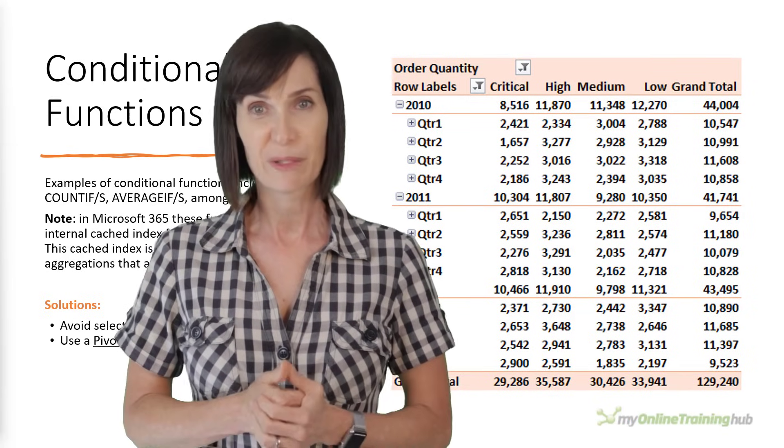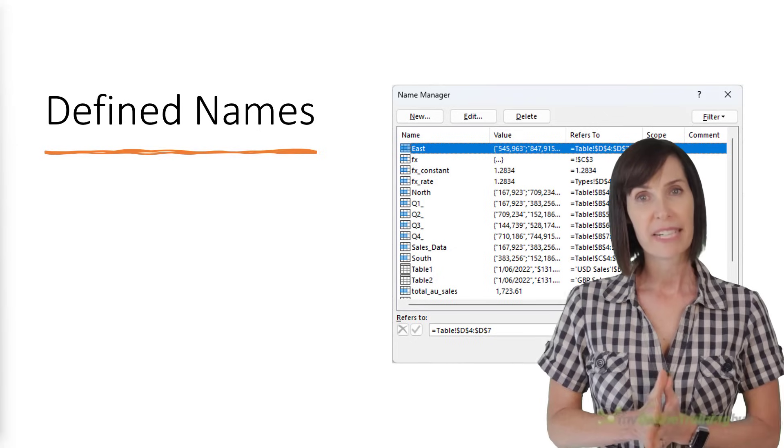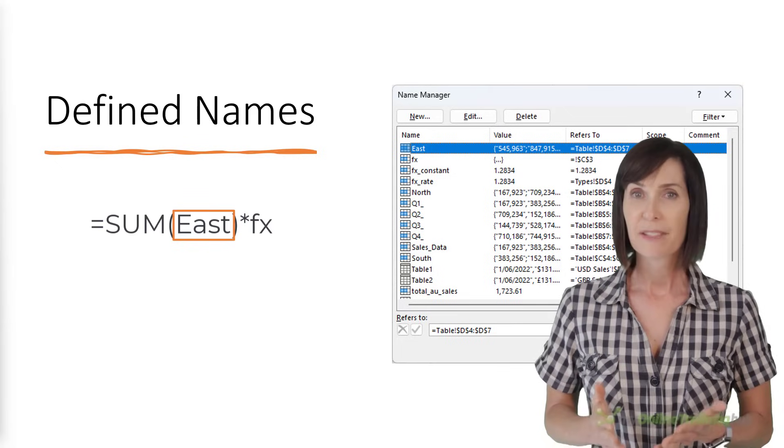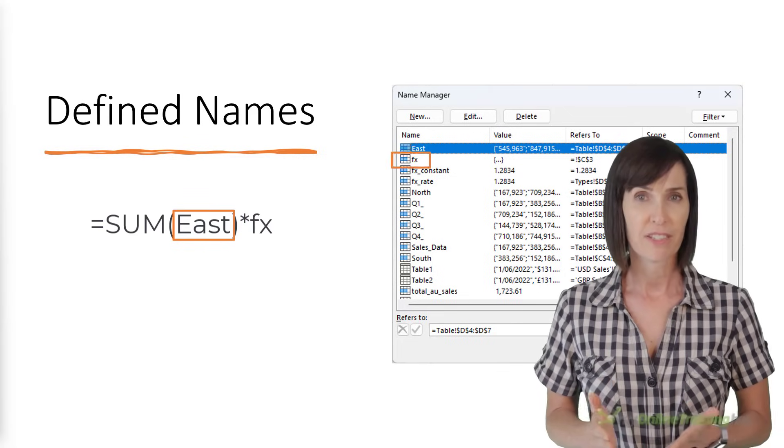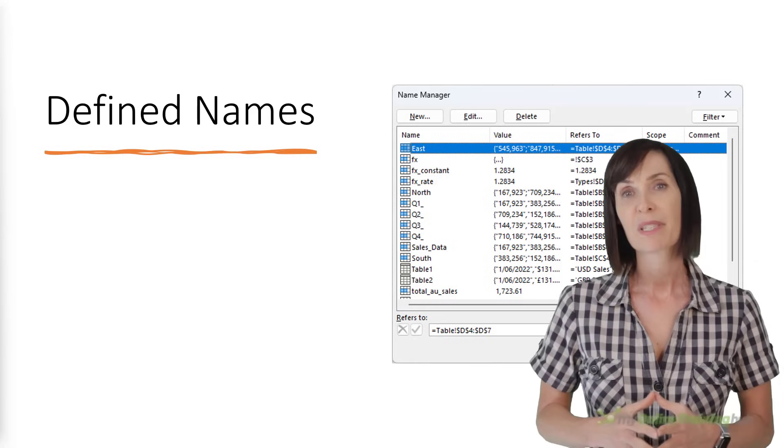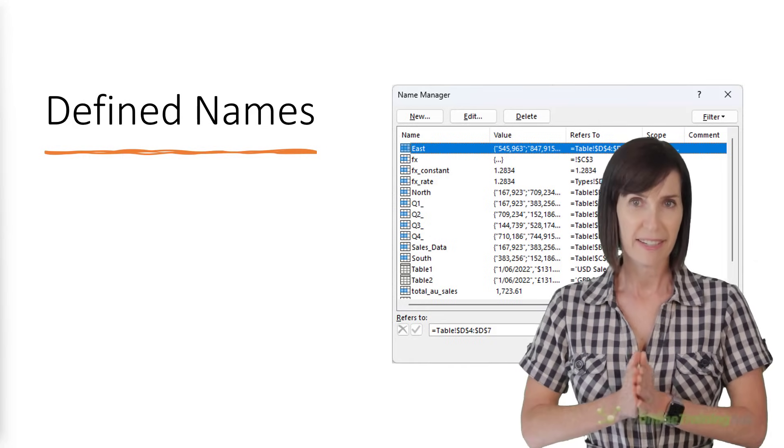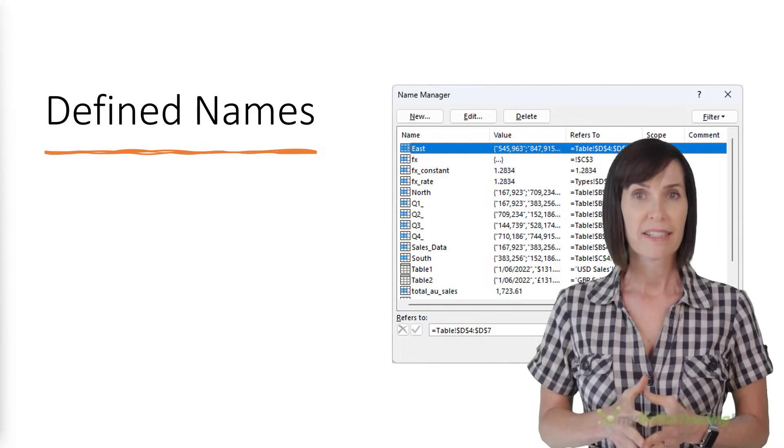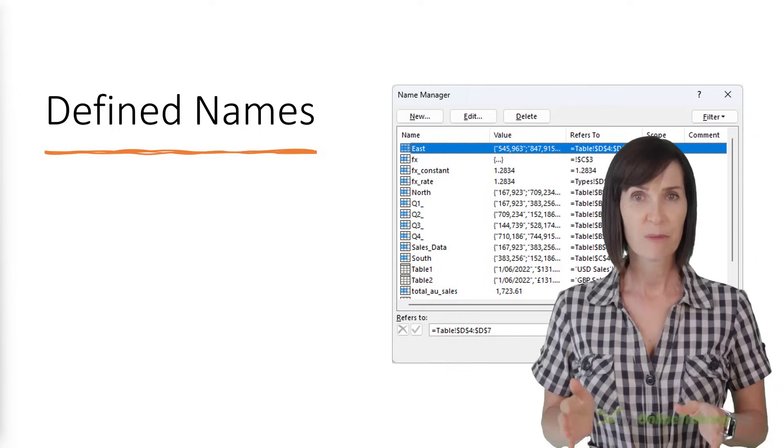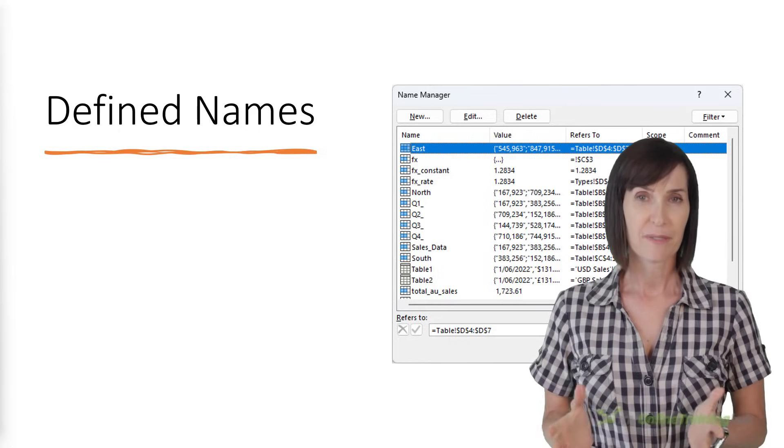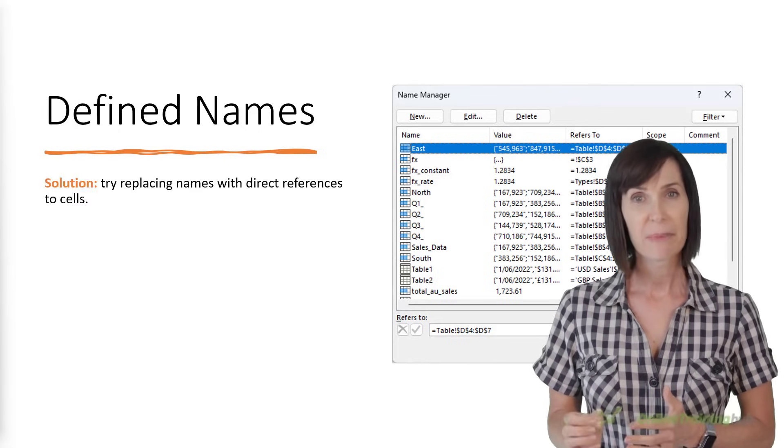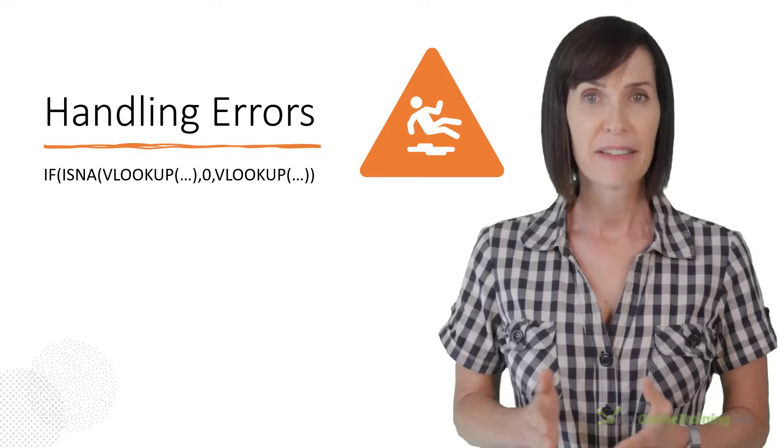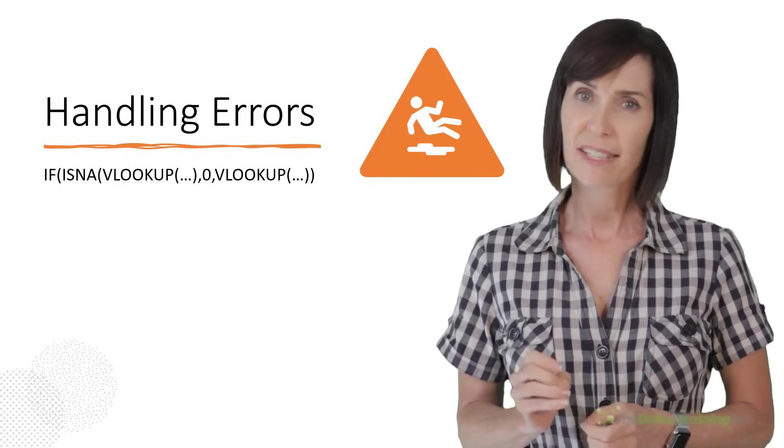Defined names are recalculated each time a formula that refers to the name is recalculated, even if the value of a cell doesn't change when calculated. Now, defined names are one of the most valuable Excel features, so don't avoid them because they might cause performance problems. Instead, check if any of the other causes could be contributing and resolve them first. Then, if you still have problems, try replacing names with direct references to cells.